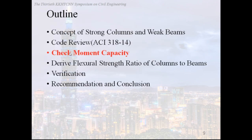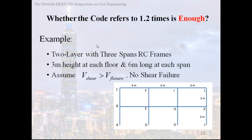Thirdly, check moment capacity. We will verify whether the specification is conservative. So we ask this question: whether the code refers to 1.2 times is enough. In previous ETABS example, we know that the 1.2 times is not enough. So here is an example, and there are some structural descriptions. And among them, the most important thing is that we assume V shear larger than V flexure, that is no shear failure.